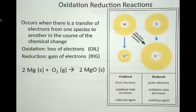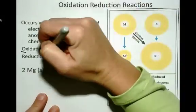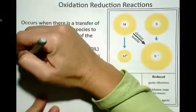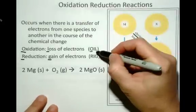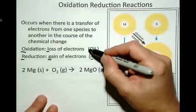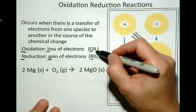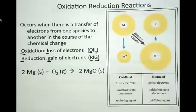OIL is oxidation is loss of electrons, and RIG is reduction is gain of electrons. So oxidation is loss, OIL, and reduction is gain, RIG. It's just a way to remember those terms.